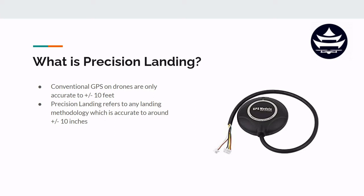For many applications, that might be good enough — that might be precise enough. If you're a drone surveyor and you just want to scan the field, take a bunch of images, and land the drone in a general area, plus or minus 10 feet is probably fine. But there are other applications that require a much more precise error rate, so we're going to define precision landing here as any landing methodology which is accurate to around plus or minus 10 inches or better.